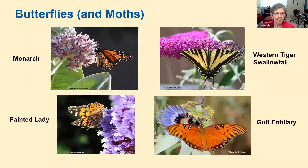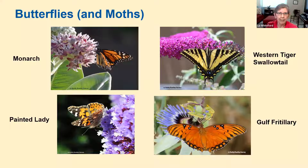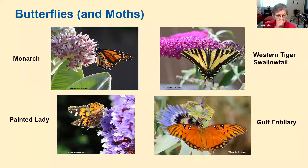Butterflies and moths — here's the monarch upper left, the swallowtail upper right, the painted lady bottom left, and the gulf fritillary or passionflower butterfly bottom right. I had an opportunity to be in Monterey County this spring. In Pacific Grove, they have a monarch butterfly reserve habitat, which had not been doing well in previous years. Suddenly it was inundated with monarchs — they were seeing more monarchs than they've seen in years, which I think is a good sign.